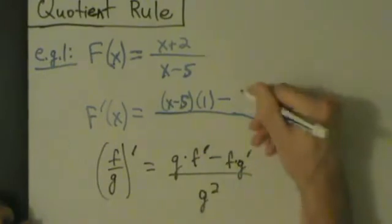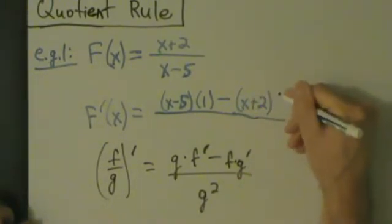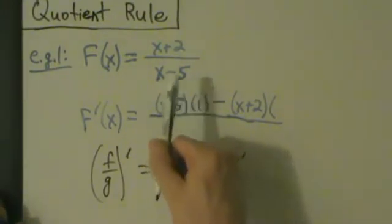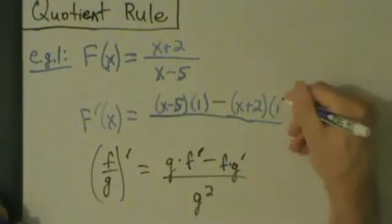Then minus the top, x plus 2, times the derivative of the bottom. What's the derivative of the bottom? Well, the bottom is x minus 5, so its derivative is 1 minus 0, or in other words, just 1.